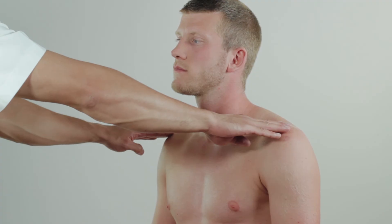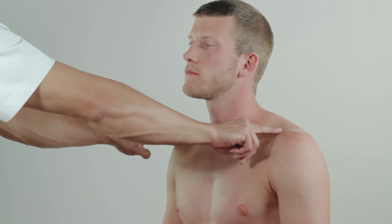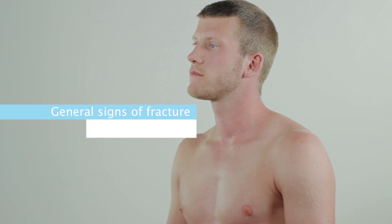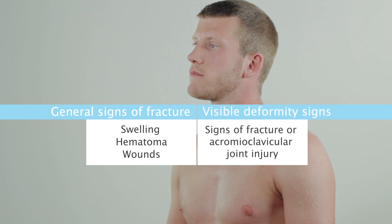The symmetry of the shoulders can also be evaluated from the front. Ideally, you should be able to draw a horizontal line from one acromion to the other. Additionally, the outline and course of the clavicles should be checked for any signs of fracture, such as swelling, hematoma, or wounds. If visible deformity is present in the area of the lateral clavicle, both a clavicular fracture or an acromioclavicular joint injury should be considered.